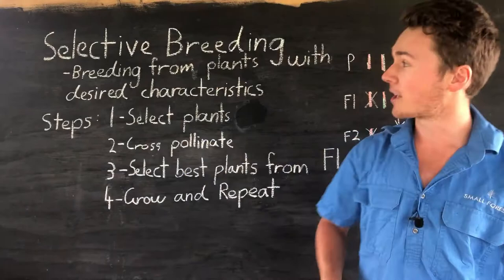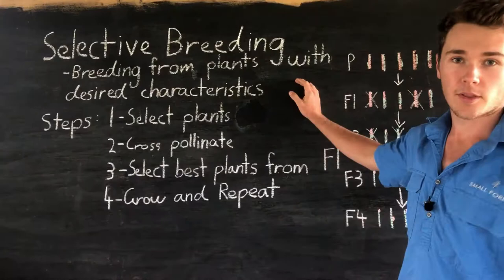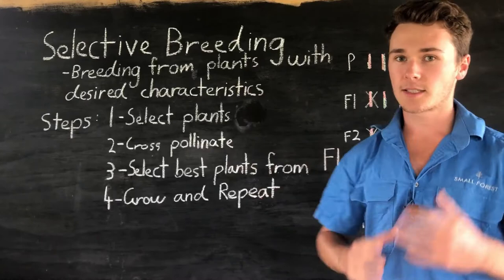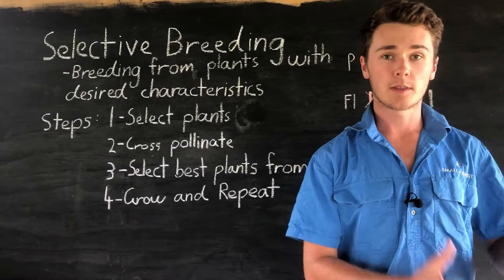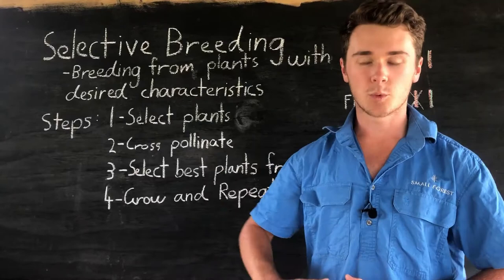Now that we've got all that background out of the way, let's get into plant breeding. One of our first techniques is selective breeding — selecting plants with our desired characteristic and then breeding from those, so we increase the frequency of those characteristics. To do this there are four simple steps: first, select plants that already have the desired trait; next, allow them to cross-pollinate; thirdly, select the plants with this desired trait from the offspring; let them grow, and then repeat. Over time, each generation will increase the characteristic we desire.